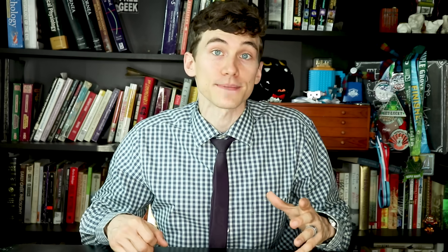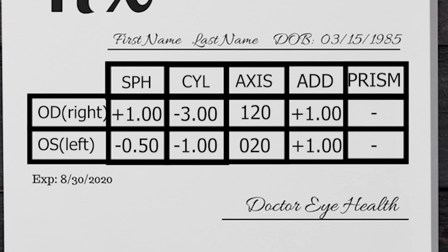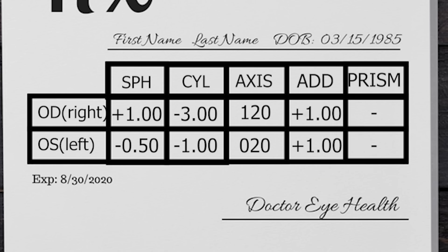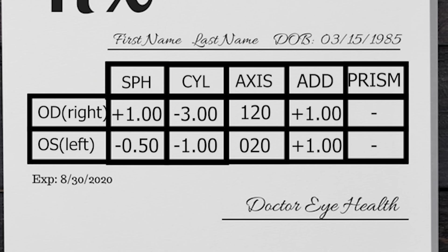If you don't know whether you have astigmatism, you can figure that out by looking at your most recent glasses prescription. Looking at a prescription pad, you'll see the first and last name, date of birth, expiration date, and the doctor's signature. On the left side you'll see two rows: OD, which stands for the right eye, and OS, which stands for the left eye. There are several columns — the first is labeled SPH, which stands for sphere. The higher the number, the stronger the prescription. The number will also have a positive or negative symbol, indicating whether the lens is correcting for farsightedness (hyperopia) when positive, or nearsightedness (myopia) when negative.